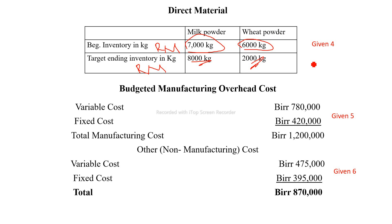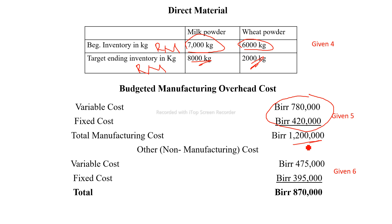If you want to buy milk powder, it will be about 80 kilograms. Then the budgeted manufacturing overhead, including indirect costs, is also provided. The total manufacturing cost is then determined from these figures.